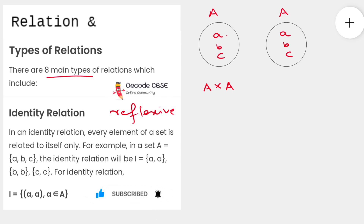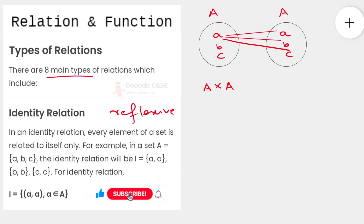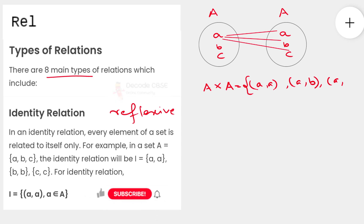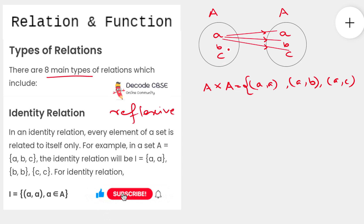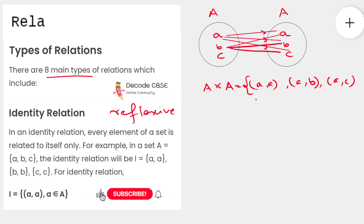For example, 'a' will pair up with 'a', then 'a' will pair up with 'b', and 'a' will also pair up with 'c' — giving us the first three ordered pairs: (a, a), (a, b), and (a, c). The same thing happens for 'b': it pairs with 'a', then with 'b' itself, and then with 'c', giving us three more ordered pairs: (b, a), (b, b), and (b, c).